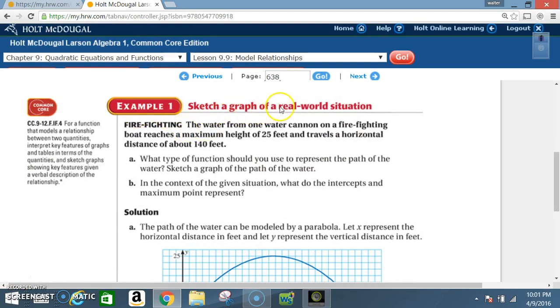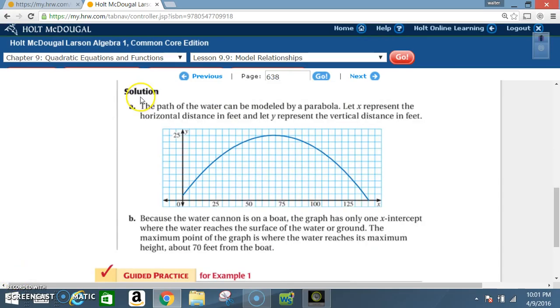Example 1: Sketch a graph of a real-world situation. Firefighting. The water from one water cannon on a firefighting boat reaches a maximum height of 25 feet and travels a horizontal distance of about 140 feet. A. What type of function should you use to represent the path of the water? Sketch a graph of the path of the water. B. In the context of the given situation, what do the intercepts and the maximum point represent?